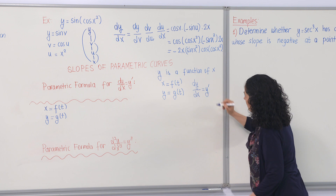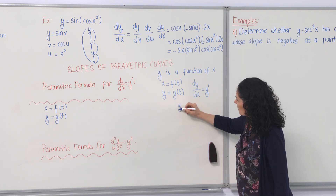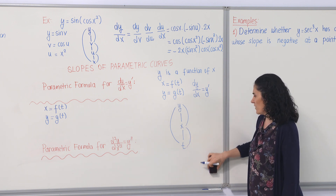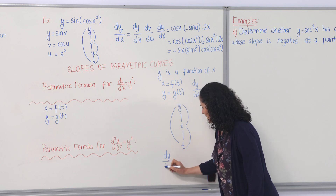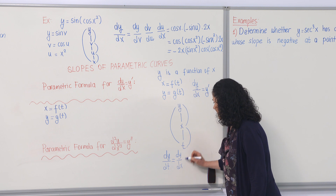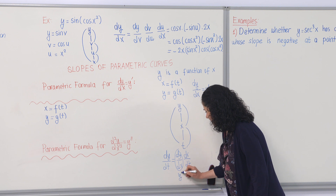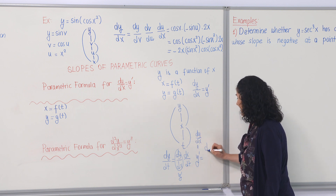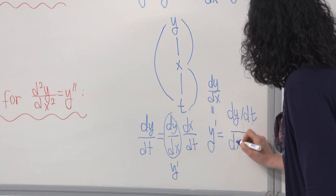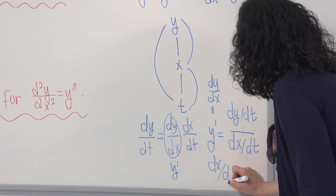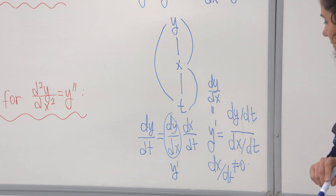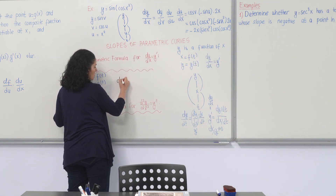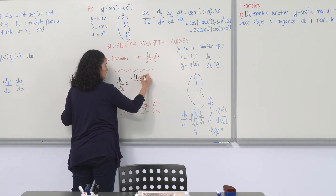Using prime notation, y prime. We can apply the chain rule using a diagram: dy over dt equals dy over dx times dx over dt. Therefore, dy over dx equals dy/dt divided by dx/dt, provided that dx over dt is non-zero. Otherwise, the proportion is not meaningful and the derivative is not defined.